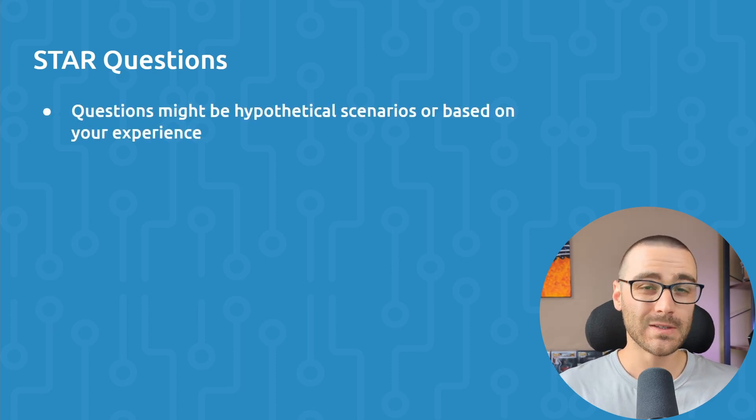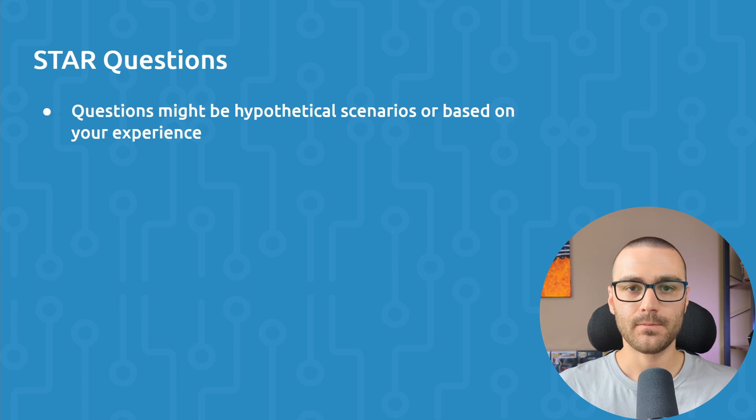So let's dive deeper into each section. Let's begin with the STAR interview questions. These questions can be either hypothetical scenarios or they can be drawn from your personal experience, and this depends on the company. For instance, Amazon or AWS will ask these STAR questions in the format as tell me about a time when this happened. So for instance, they'll say tell me about a time that you had a disagreement with a co-worker. Whereas other companies might phrase the question as what would you do in this particular situation? So what would you do if you had a disagreement with your co-worker? So STAR-based questions are behavioral questions. And as I mentioned before, STAR stands for Situation, Task, Action, and Result.